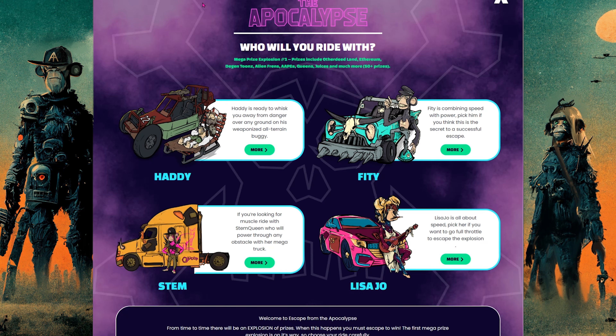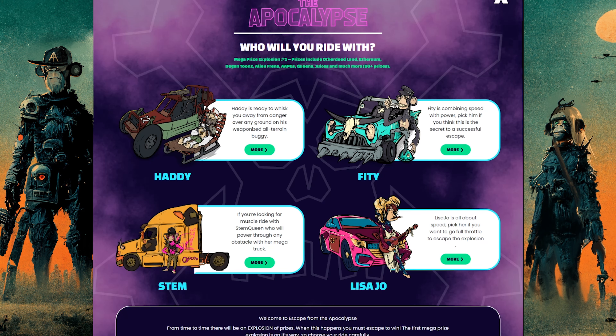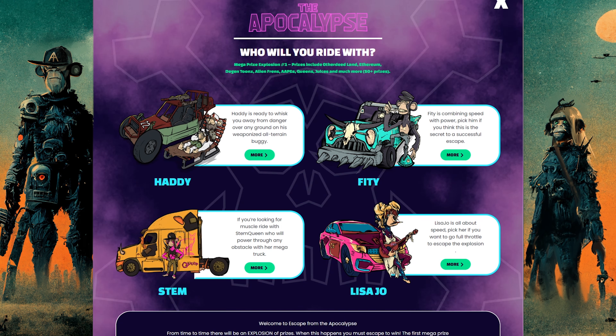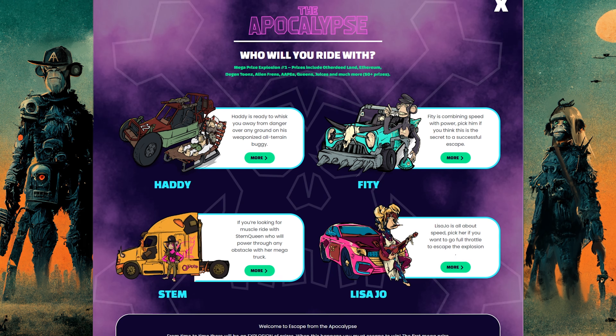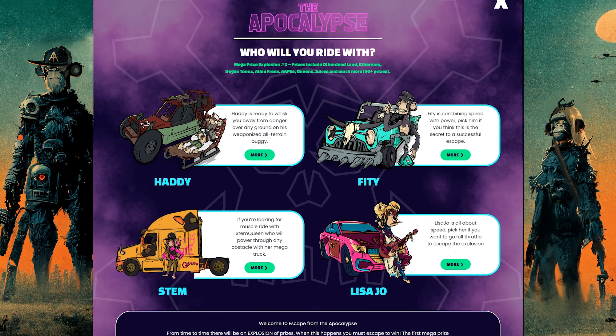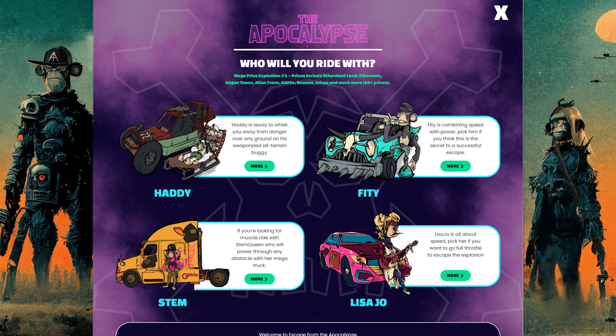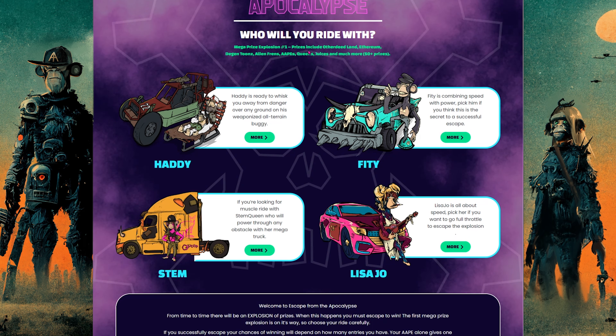You can choose who you want to ride with out of these four options. In future events, these will switch up — sometimes they will be groups, different people, or different team members. By choosing somebody to ride with, you have chances to win different prizes and you'll be entered to win in those different prize pools.